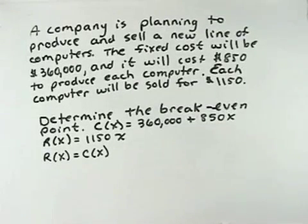A company is planning to produce and sell a new line of computers. The fixed cost will be $360,000, and it will cost $850 to produce each computer. Each computer will be sold for $1,150. Determine the break-even point.